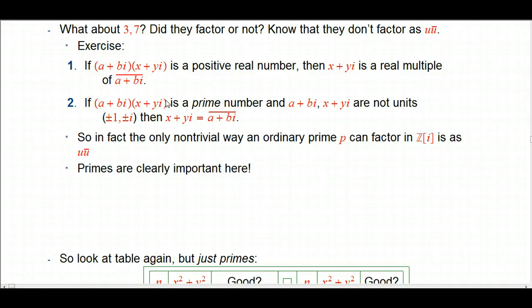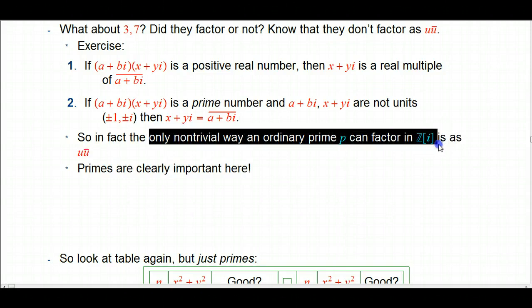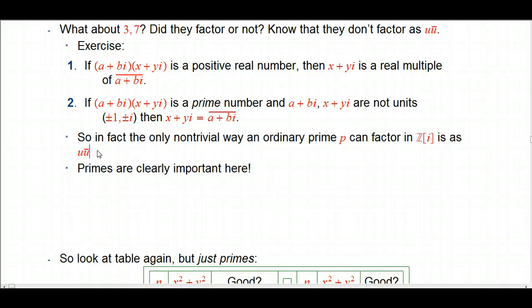Now, in our situation, we're actually even more special. This is the first place we're going to take advantage of the fact that we're now thinking just about primes. If the product happens to be a prime number, it's a very special kind of positive real number. And if they're not units, which is just pretty trivial, then it turns out that x plus yi has to be the conjugate exactly. So the upshot is, if you do this exercise or if you just trust me, then the only non-trivial way that an ordinary prime p can factor in the Gaussian integers is as uu bar.